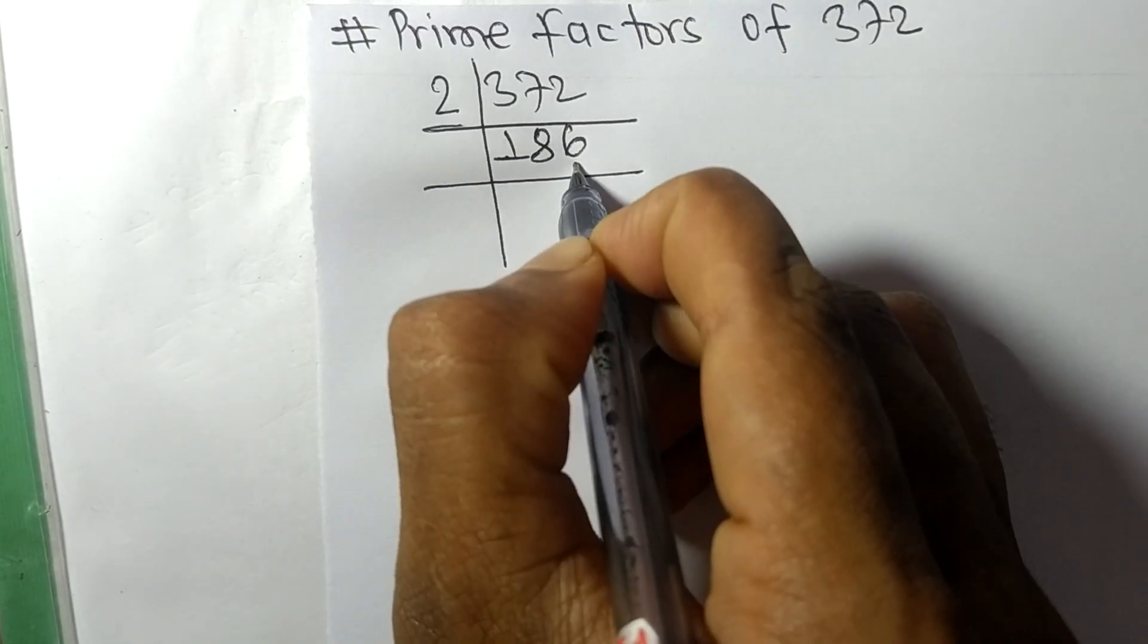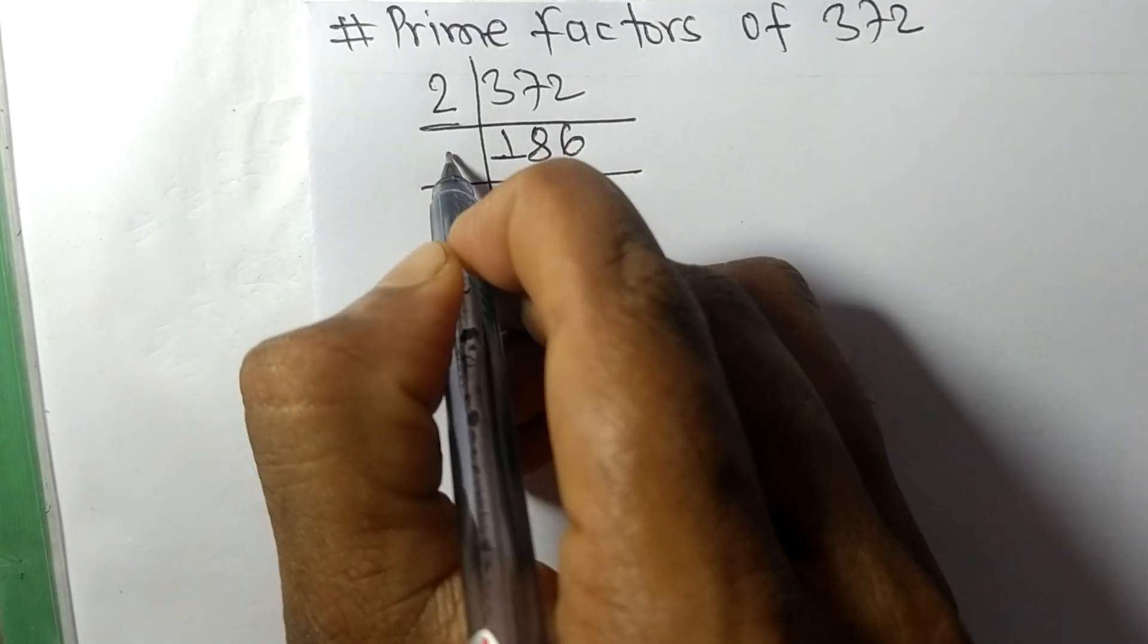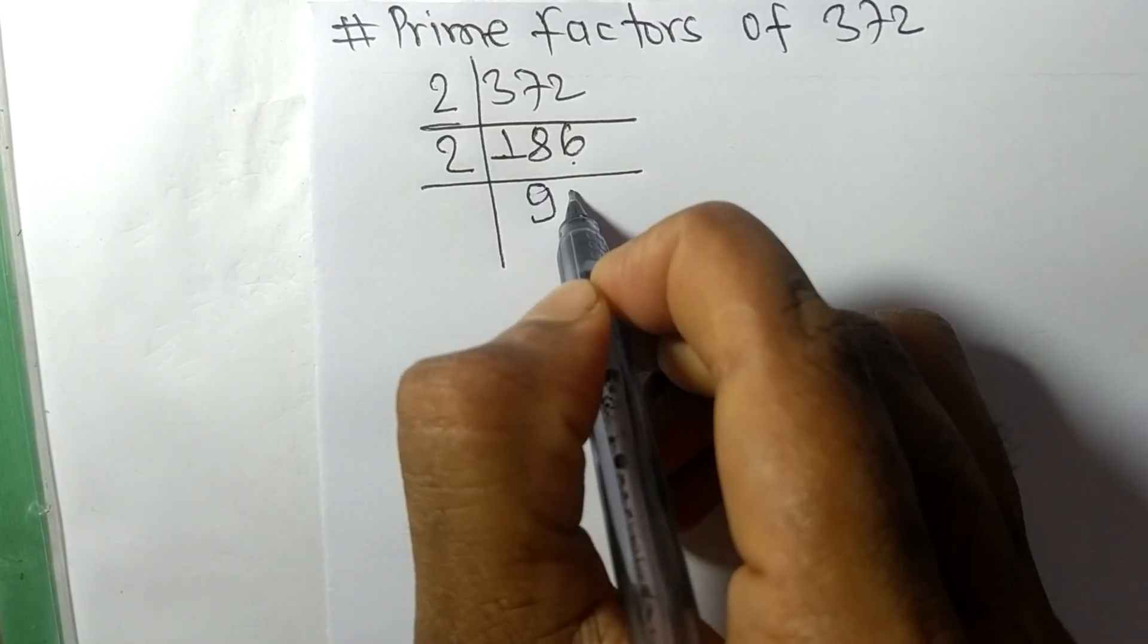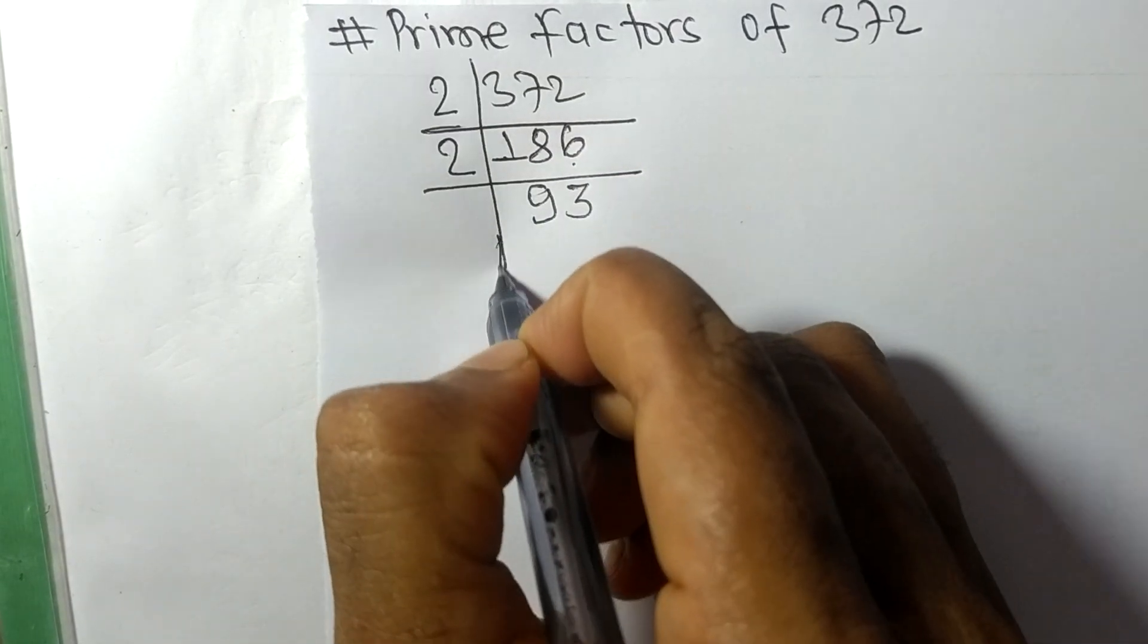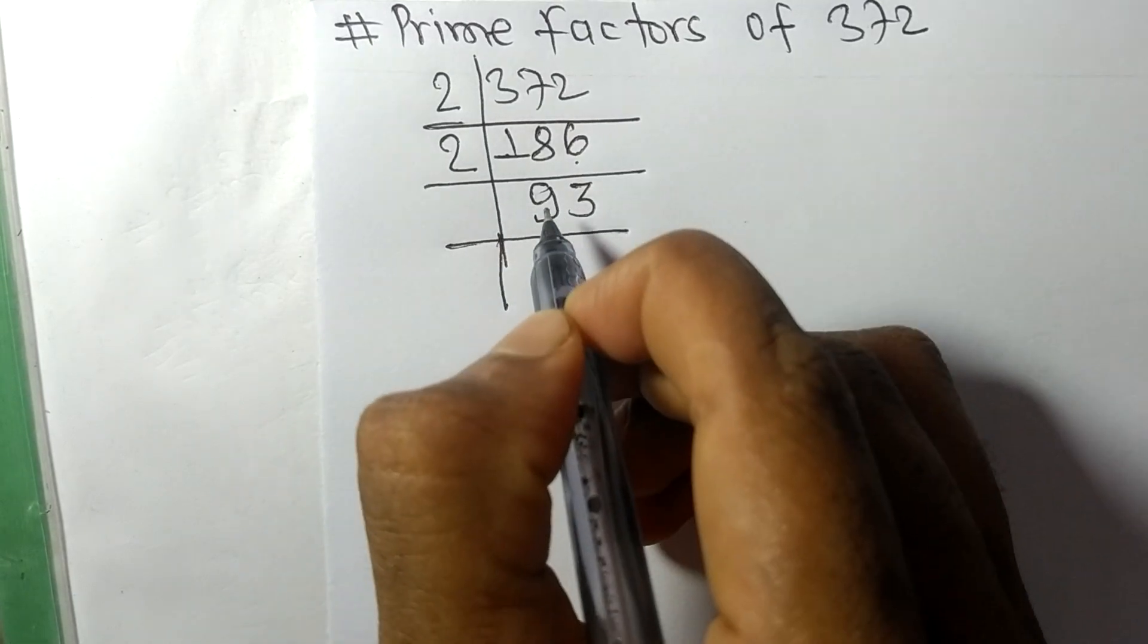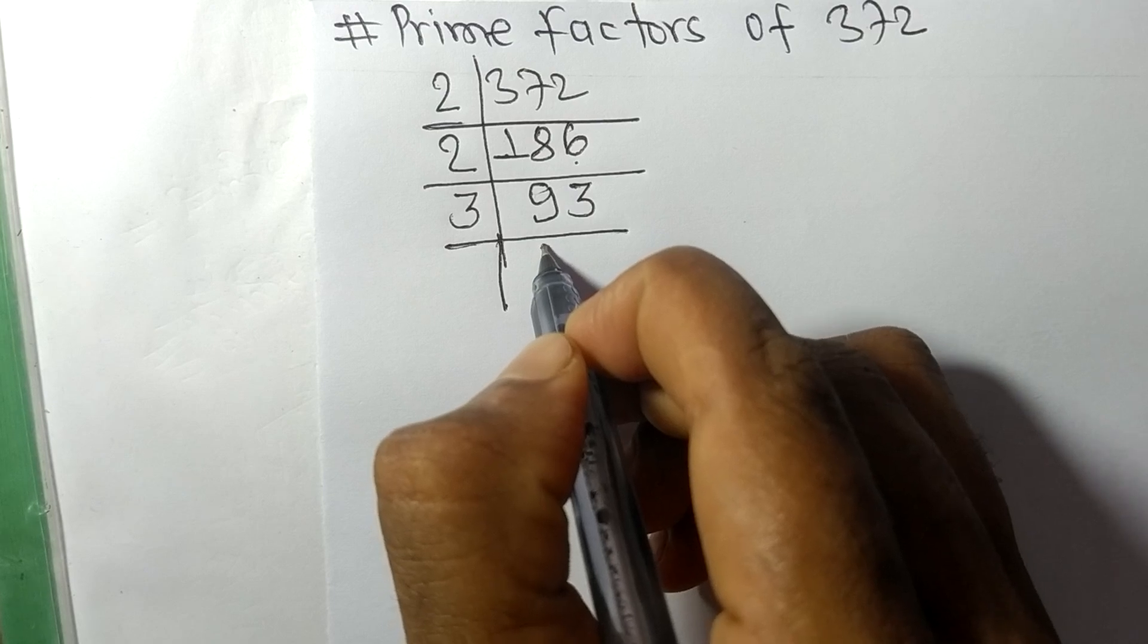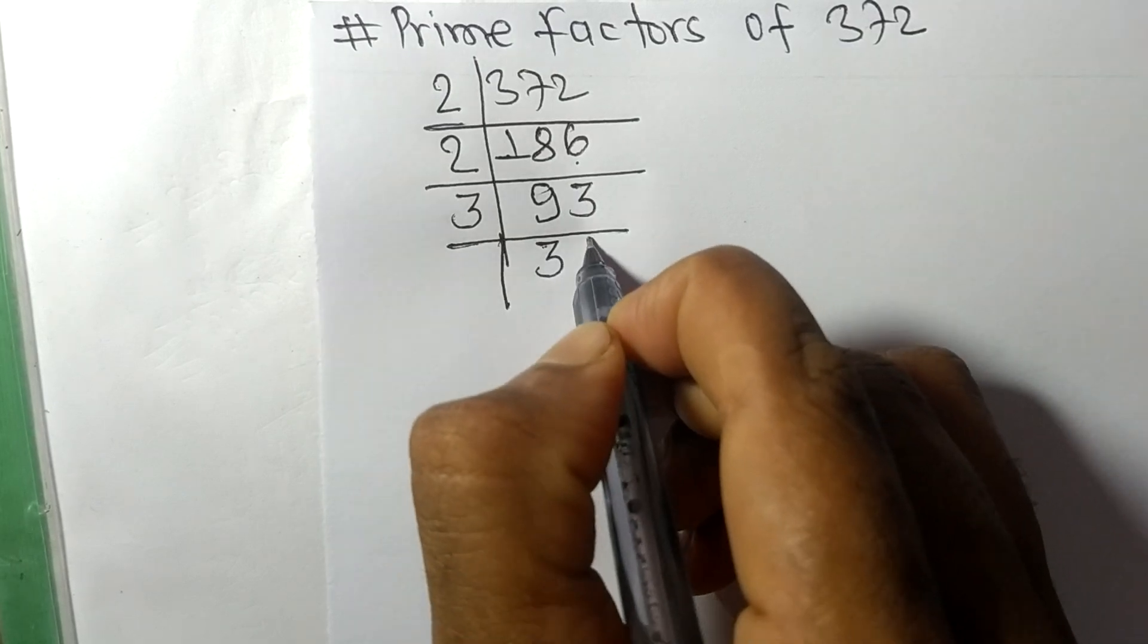Again we have an even number, so it's divisible by 2. 2 times 9 equals 18, 2 times 3 equals 6, giving us 93. Now we got 93 which is divisible by 3. 3 times 3 equals 9, 3 times 1 equals 3.